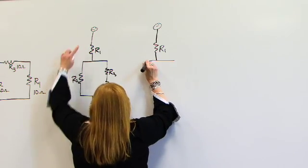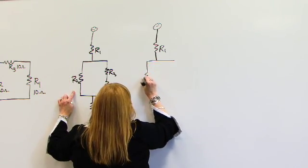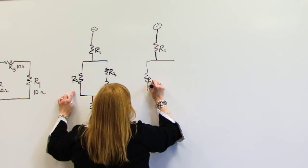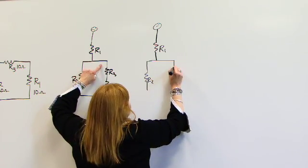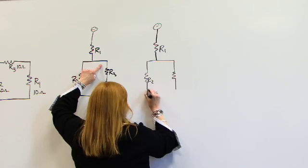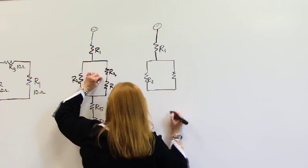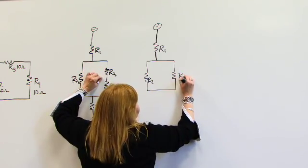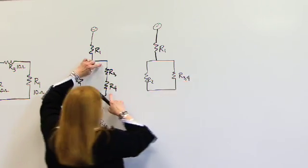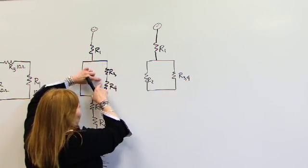If you will, the current path splits. Some of our electrons go through R2. The rest will go through R3 and R4. And we can combine this resistance because in a series circuit, resistance adds up.